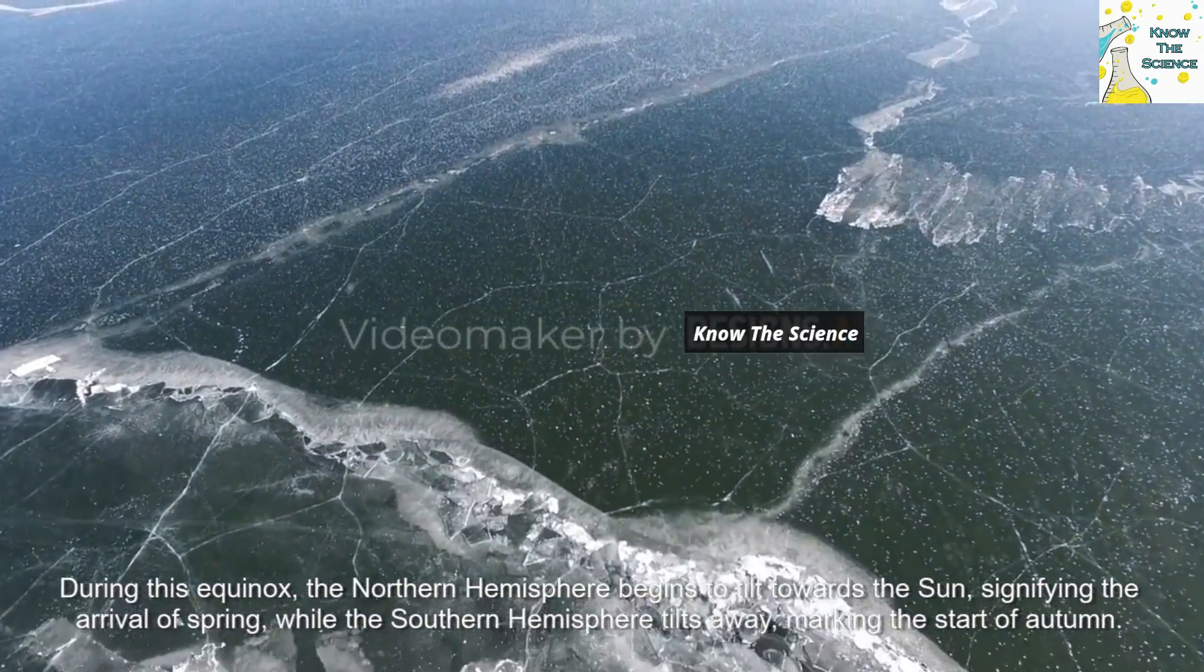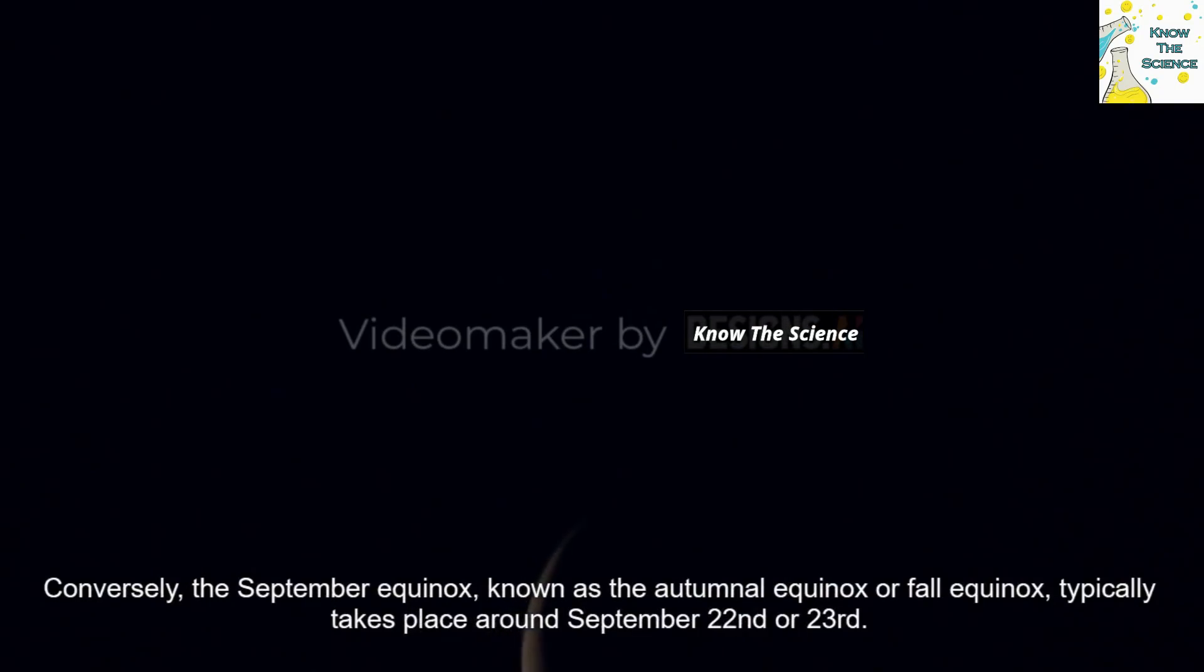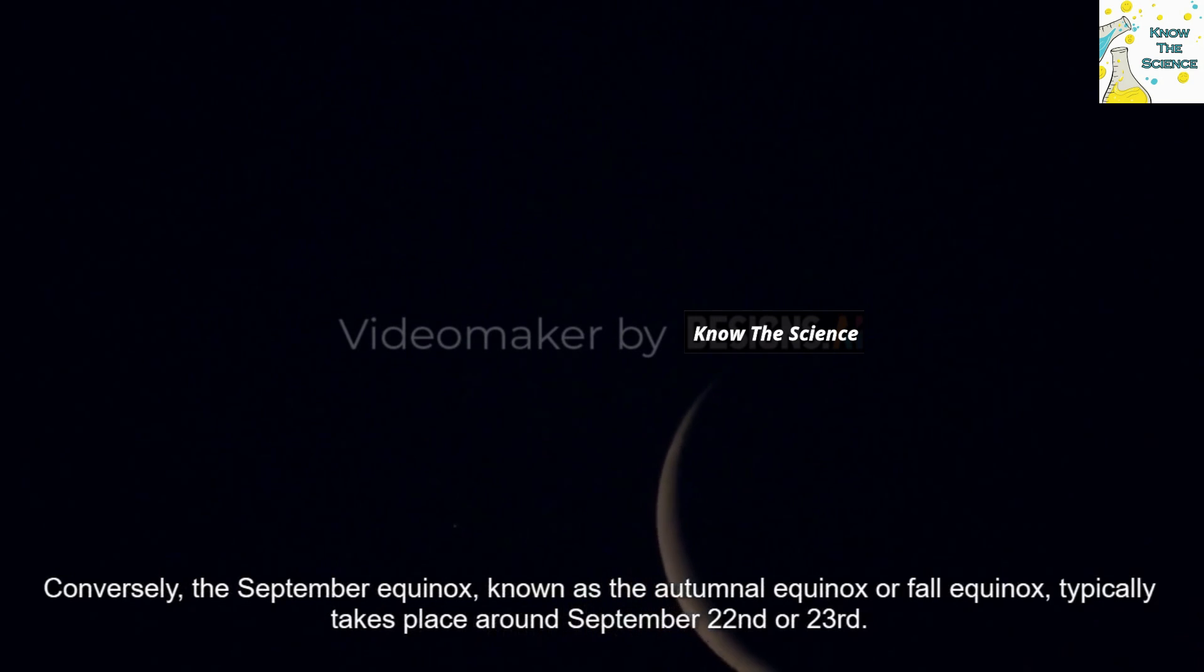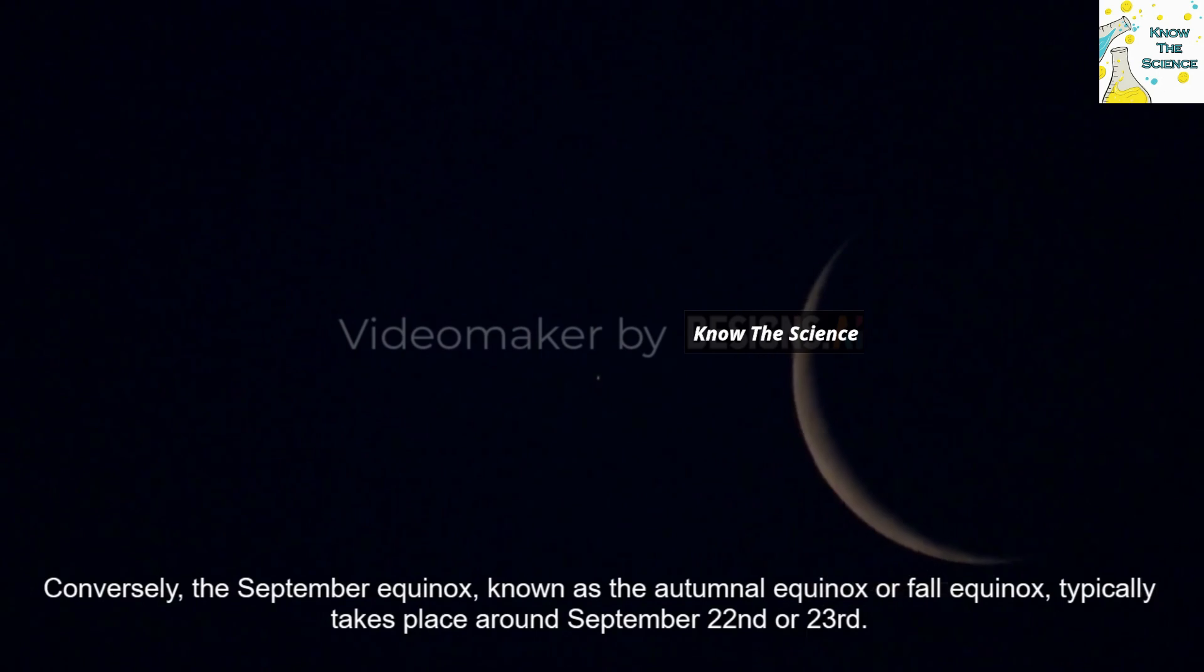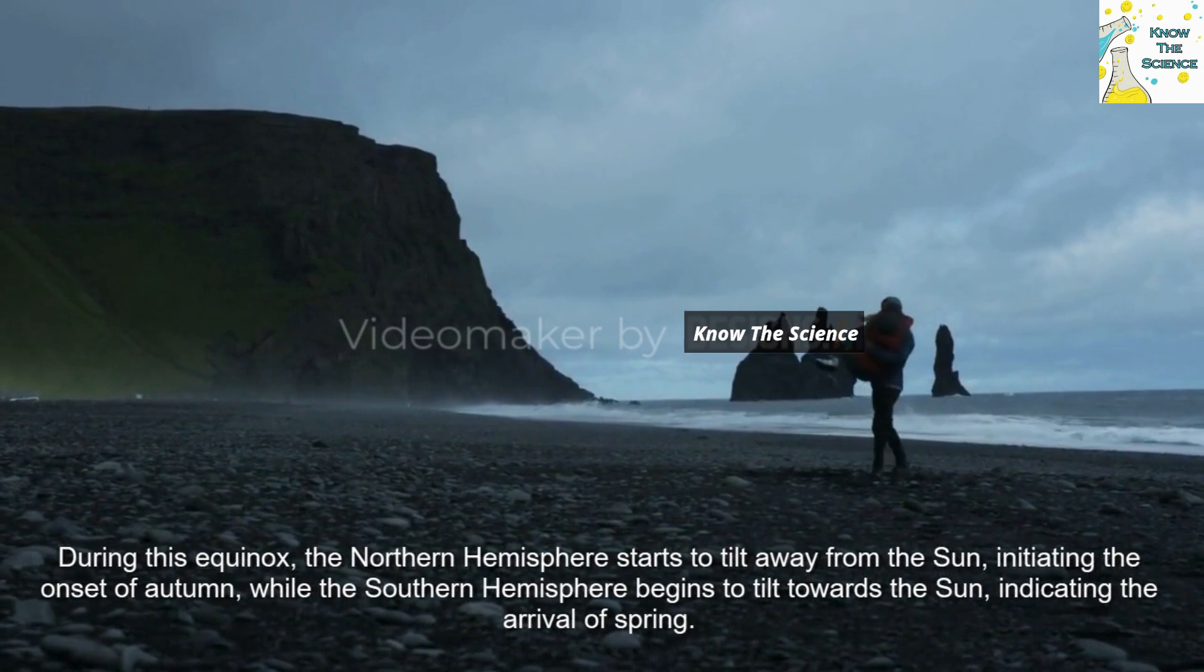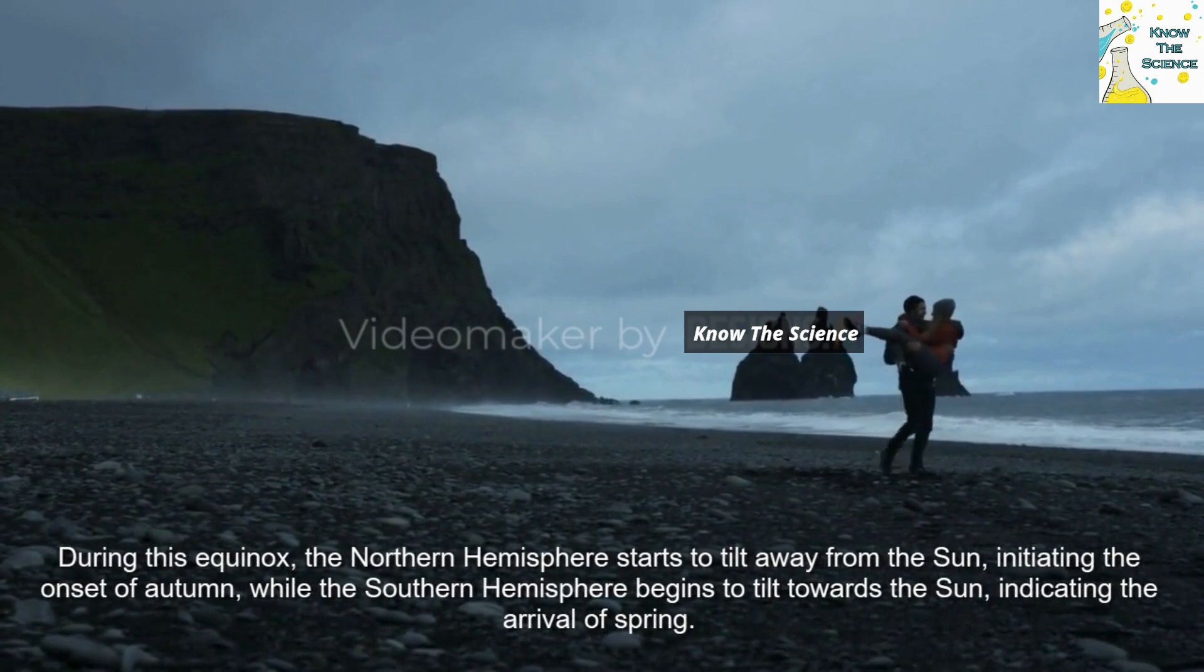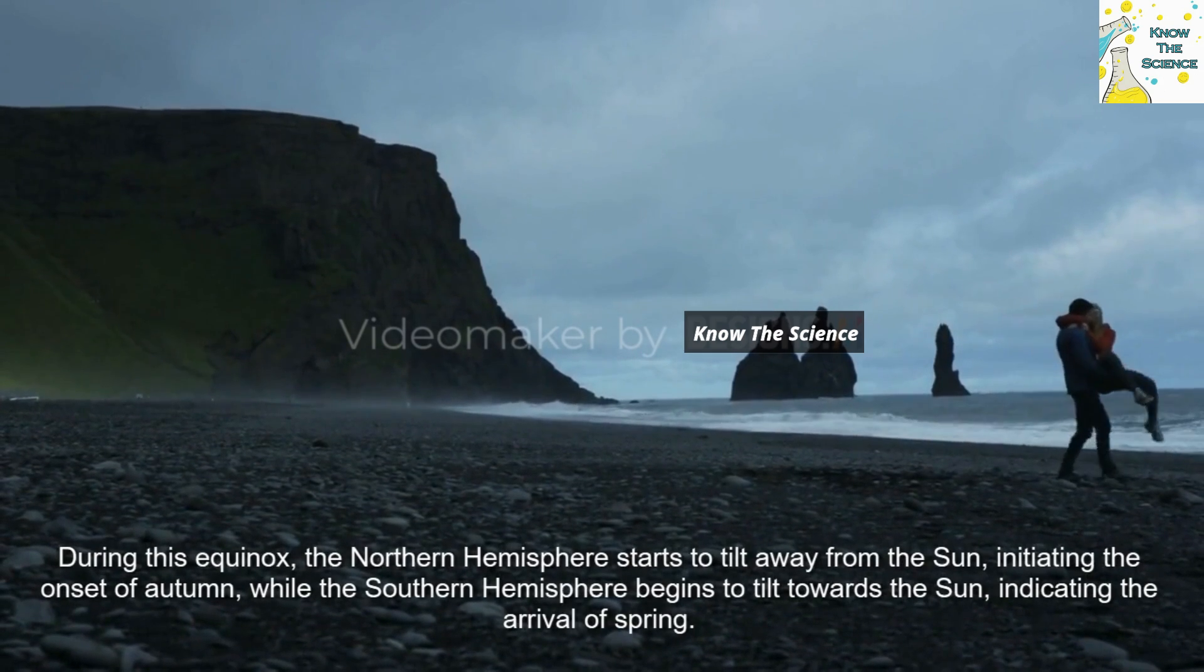Conversely, the September equinox, known as the autumnal equinox or fall equinox, typically takes place around September 22nd or 23rd. During this equinox, the Northern Hemisphere starts to tilt away from the Sun, initiating the onset of autumn, while the Southern Hemisphere begins to tilt towards the Sun, indicating the arrival of spring.